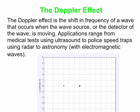What the Doppler effect is: it's the shift in frequency of a wave that occurs when the source of the wave, or the detector of the wave — such as your ear — is moving. There are lots of applications, including medical tests using ultrasound, police speed traps using radar, as well as astronomy.